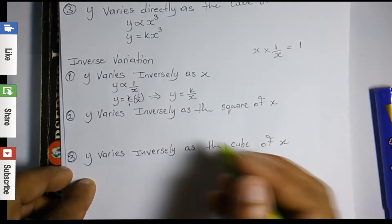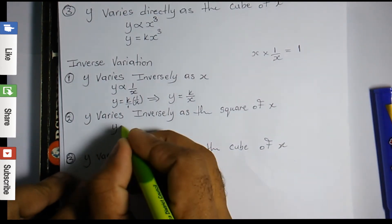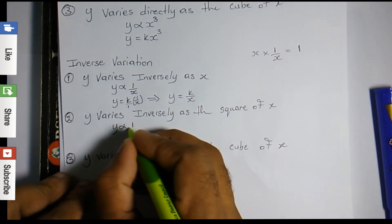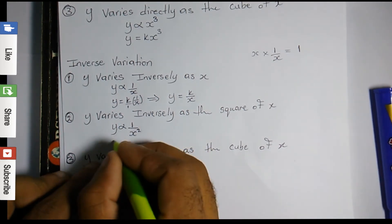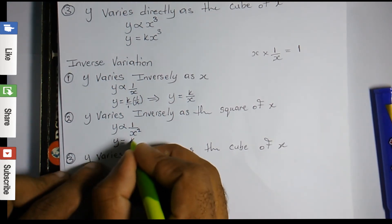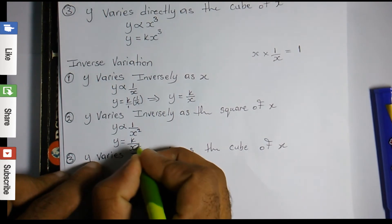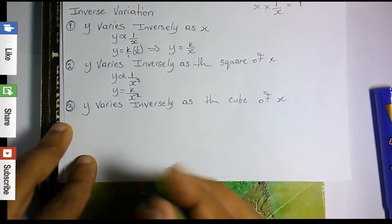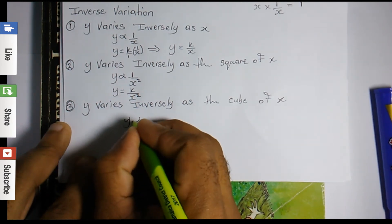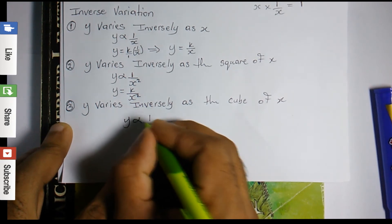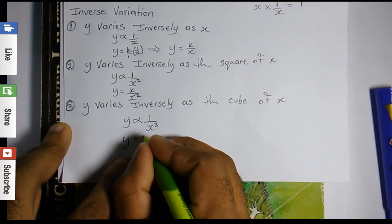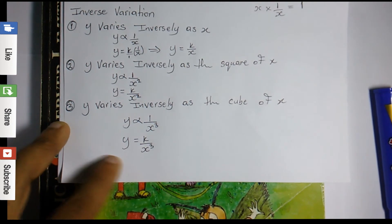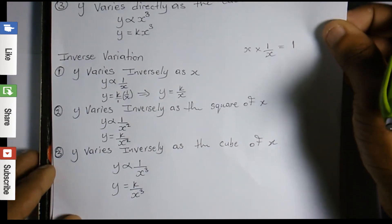For the second inverse phrase, 'y varies inversely as the square of x': this is 1 over x squared, so the equation is y equals k over x squared. For the third, 'y varies inversely as the cube of x': this is 1 over x cubed, so y equals k over x cubed. That's how we convert inverse variation word phrases into equations.